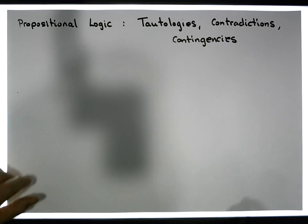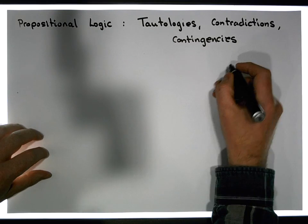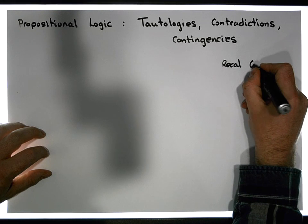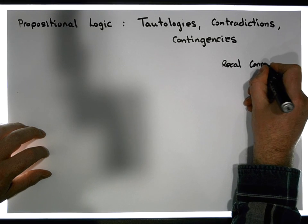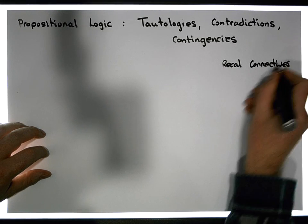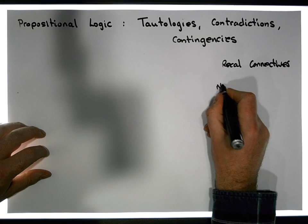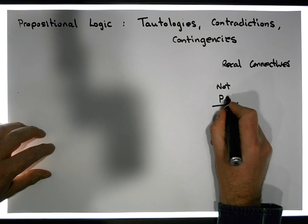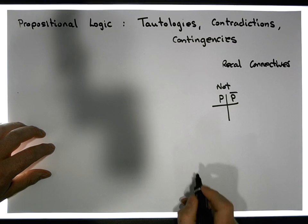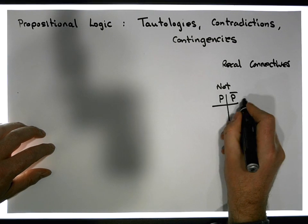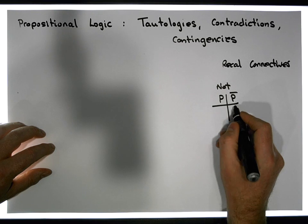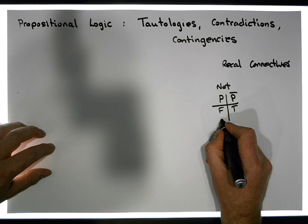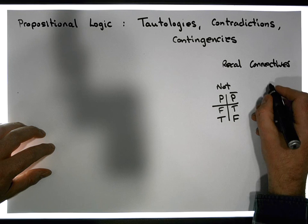Let's just recall our important connectives. We're going to rely upon the NOT connective, which takes in a single proposition. P-bar symbolizes NOT p. When p is false, the negation of it is true; when p is true, the negation is false.